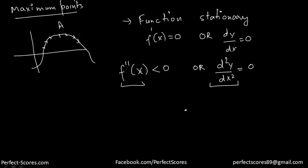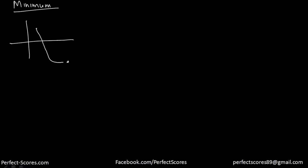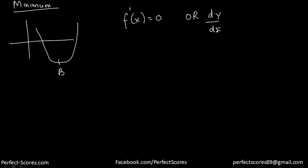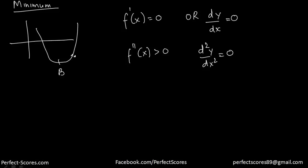Now let's talk about the minimum point. At the minimum point, the derivative of the function is again going to be zero because the function is stationary. The double derivative is going to be greater than zero, because after this point the function starts to increase, meaning the rate of change of the derivative with respect to x is going to increase. So at a local minimum: dy/dx = 0 and d²y/dx² > 0.